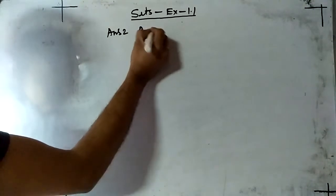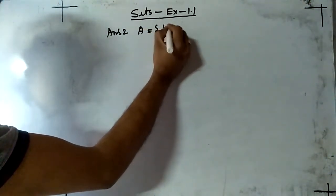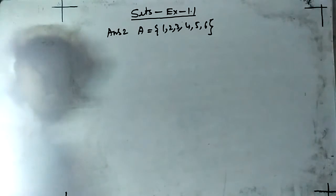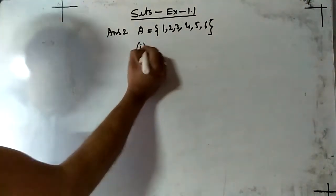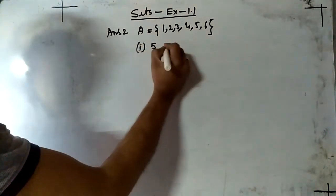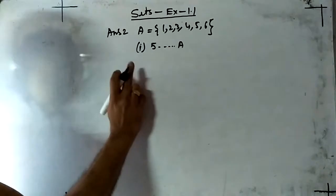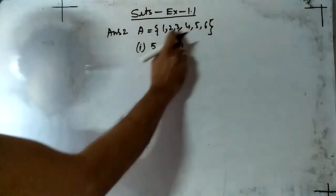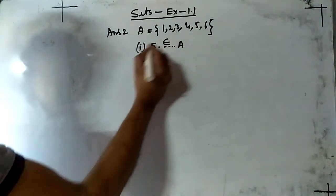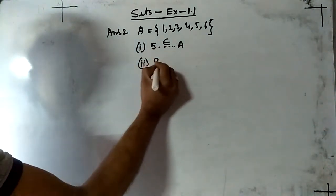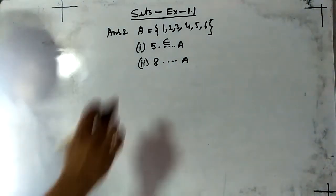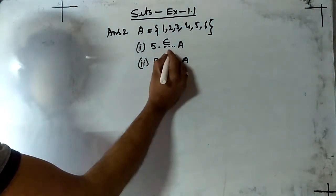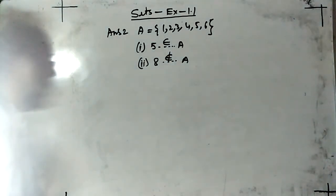Answer 2. Set is given A equals to 1, 2, 3, 4, 5, 6. I am showing part 1 and 2. Here fill in the blanks, you have to write belongs to or does not belong to. Just check, is π present or not? Yes, π is present, so symbol will be belongs to. Second, 8. Now check, 8 belongs to A or not? Here 1 to 6 only, 8 does not belong to, so write does not belong to.